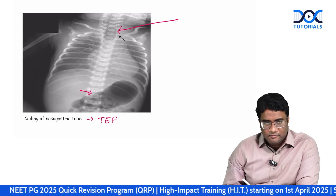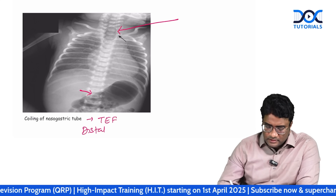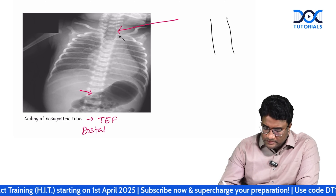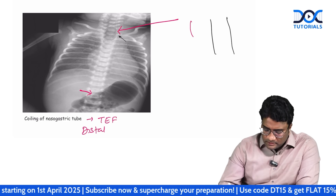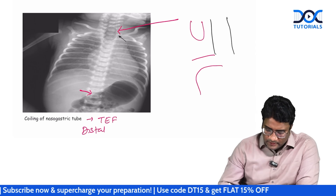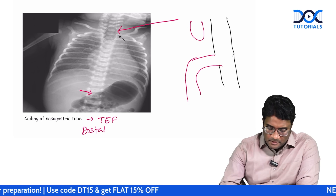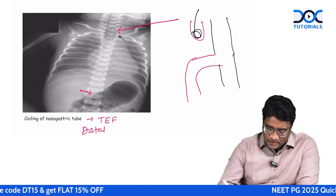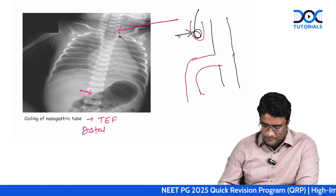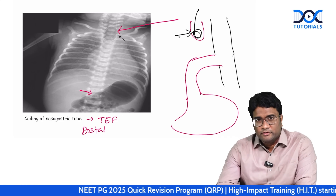There is gas in the abdomen because this is a distal type. If the upper esophagus is atretic and the lower part is connected to the trachea, that is a distal tracheoesophageal fistula. Gas will enter the abdomen, but when passing a nasogastric tube it will show coiling. So coiling of nasogastric tube plus gas in the abdomen indicates distal tracheoesophageal fistula.